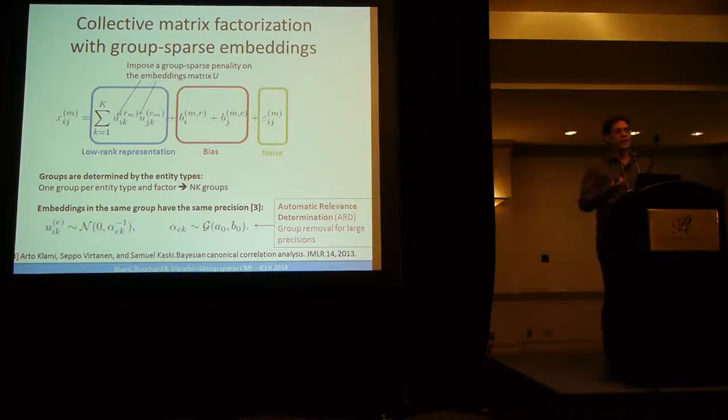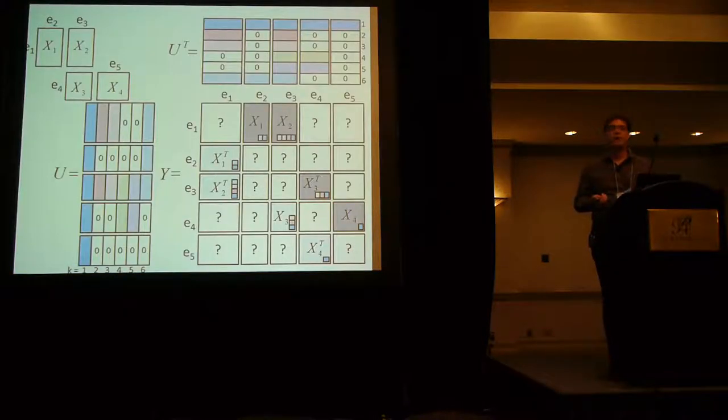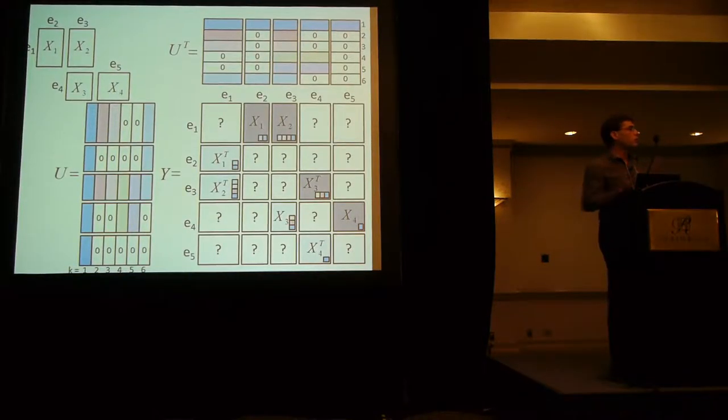So when you do variational Bayes, and you learn such a model, some alpha tends to infinity. And we can remove them. An alpha which tends to infinity means a zero variance. So basically, your embedding equals zero. So during the learning of your embedding, you will have exact zeros.